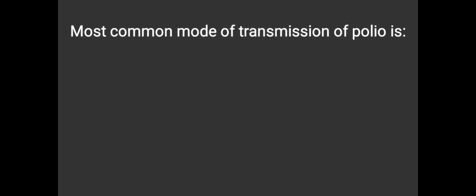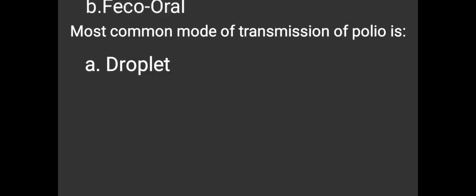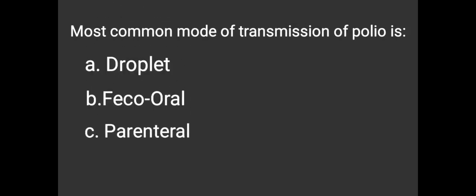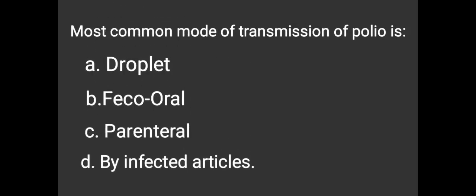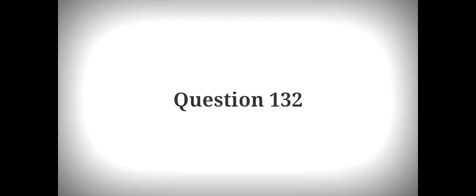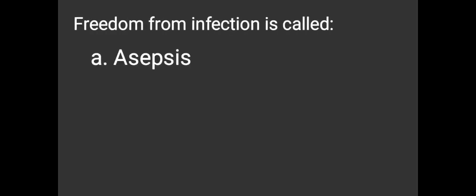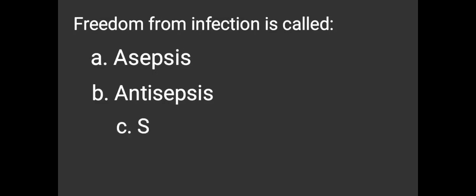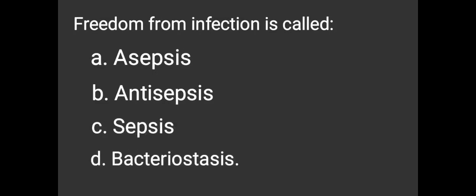The most common mode of transmission of polio is: A. Droplet, B. Feco-oral, C. Parenteral, D. By infected articles. The answer is B. Feco-oral. Freedom from infection is called: A. Asepsis, B. Antisepsis, C. Sepsis, D. Bacteriostasis. The answer is A. Asepsis.